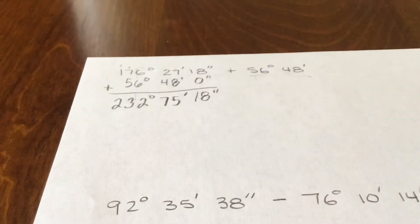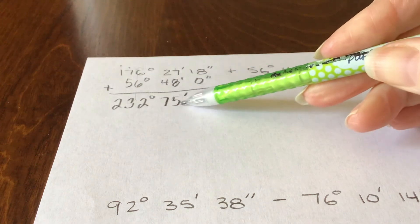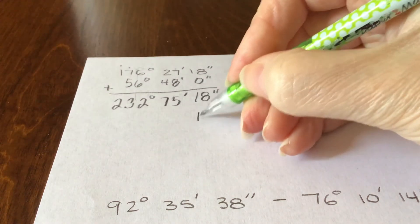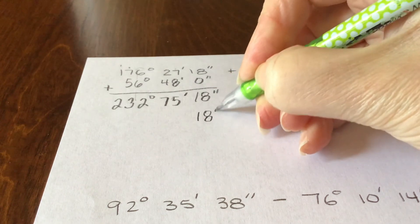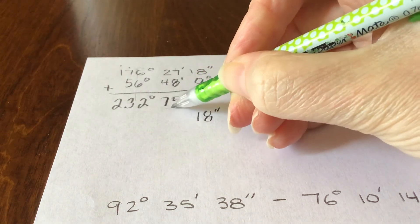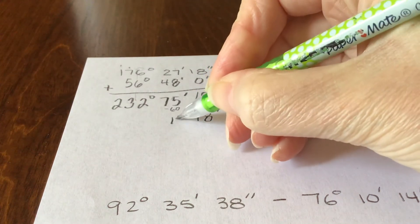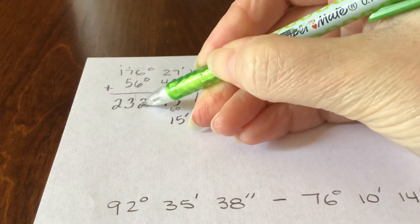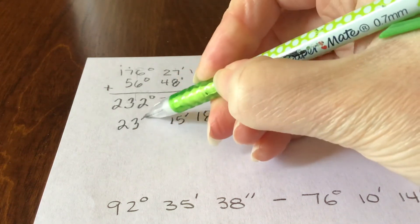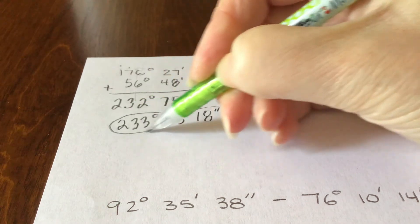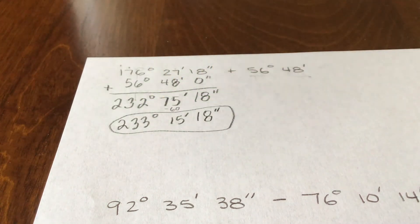And it does look like I need to regroup because this 75 is larger than 60. So the 18 seconds would remain 18 seconds. But I'm going to take 60 of these minutes and I'm going to make another degree out of them. So this would be your final answer for that problem.